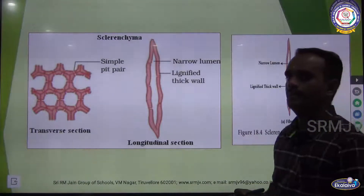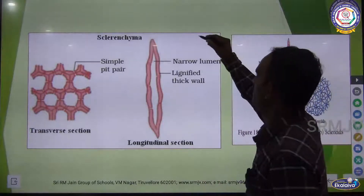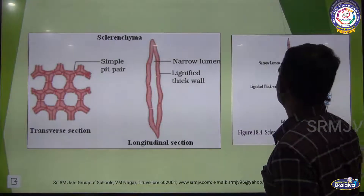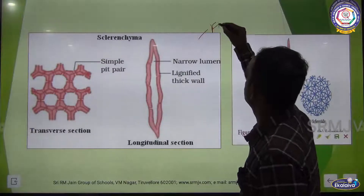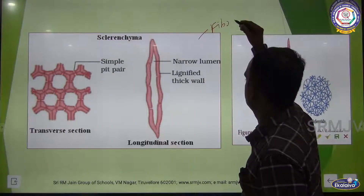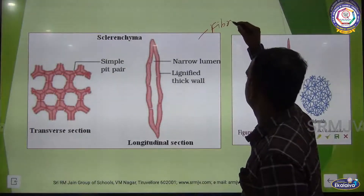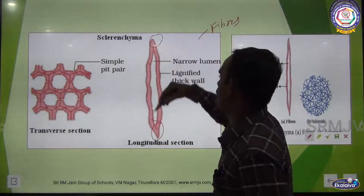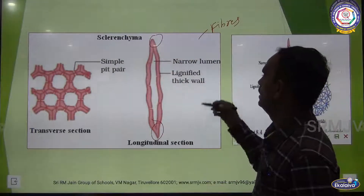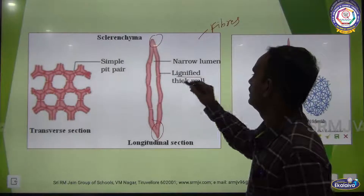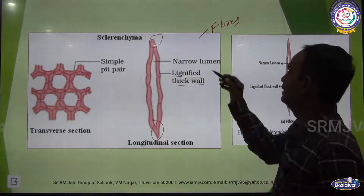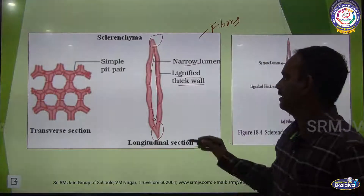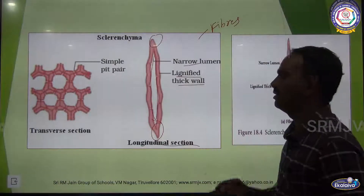See the picture here — this is the picture for fibers. It is an elongated pointed shape with a lignified thick cell wall and narrow lumen. This is the longitudinal section of fiber.